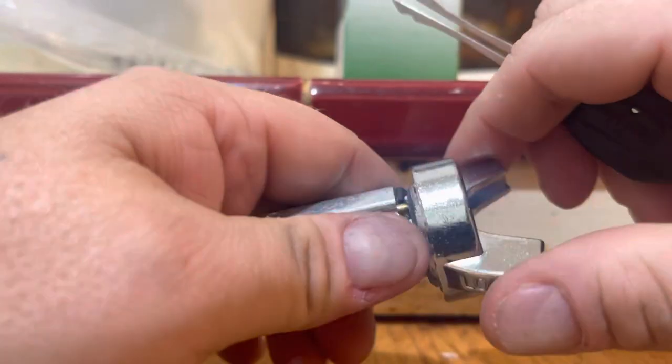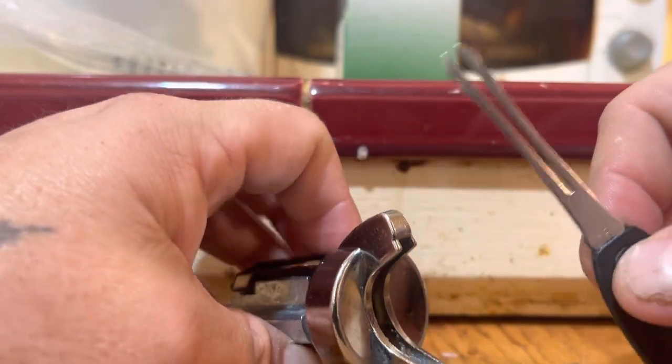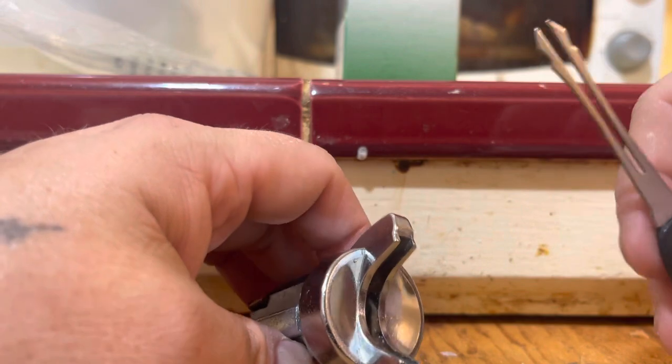You can see that it's locked. You'll need a rake, or maybe jiggler keys.